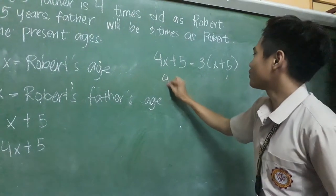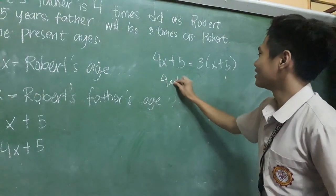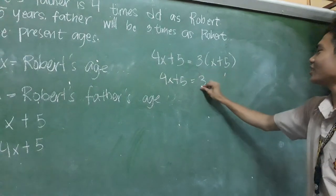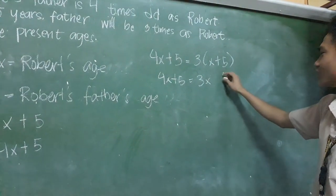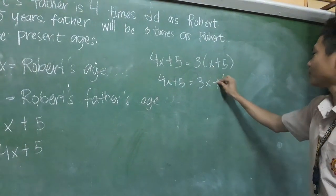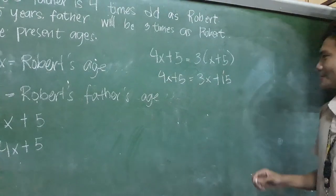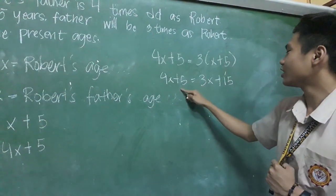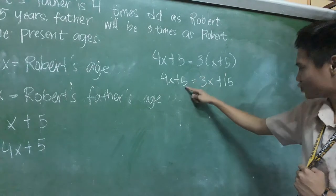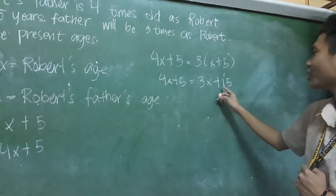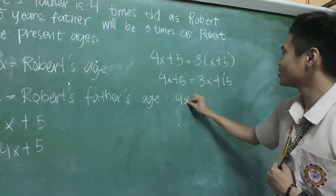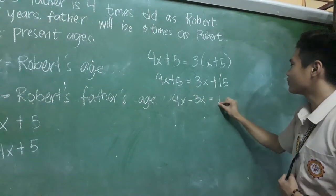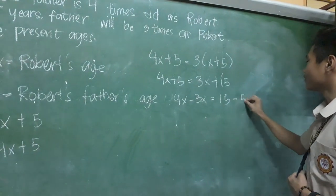So by distributive property, we copy 4X plus 5 first. Then three times X is 3X, and three times 5 is positive 15. So now we transpose 3X to the other side and transpose 5 to the other side, so 4X minus 3X equals 15 minus 5.